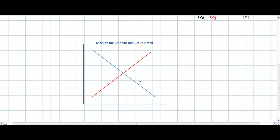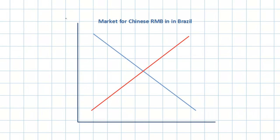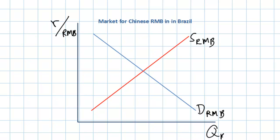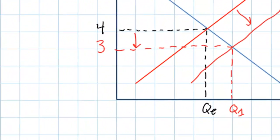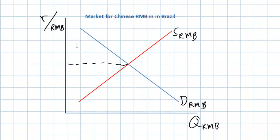Let's scroll down and look at what would happen to the market for Chinese RMB. First we need to label our graph. Since we're now talking about the market for Chinese RMB, our vertical exchange rate axis can be labeled real per RMB. The supply curve can be called supply RMB, demand is D RMB, and the horizontal axis we'll label Q RMB. It's a simple calculation to find the exchange rate: since one Brazilian real costs 4 RMB, one Chinese RMB costs 1/4 or 0.25 Brazilian real. The equilibrium quantity we'll simply label QE.